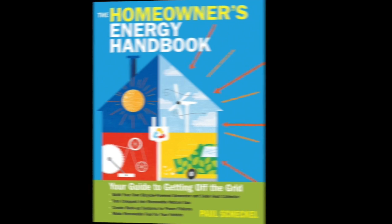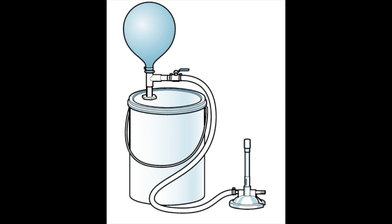Here is a diagram from the book that shows the main components: the bucket, the balloon on the top for storage, a hose and a valve that leads to a Bunsen burner that you could use to test your gas.